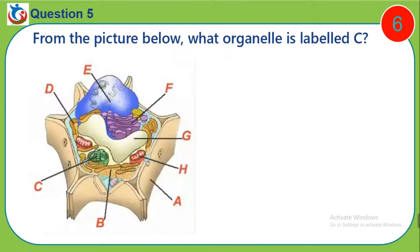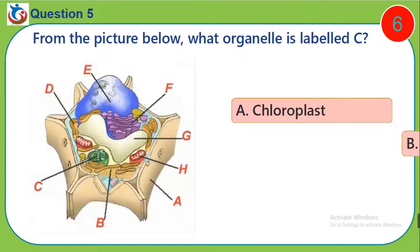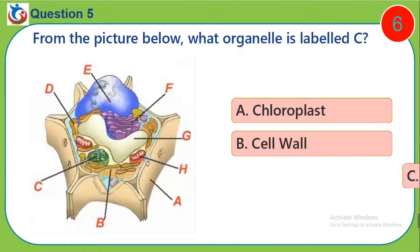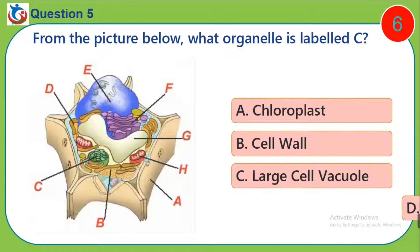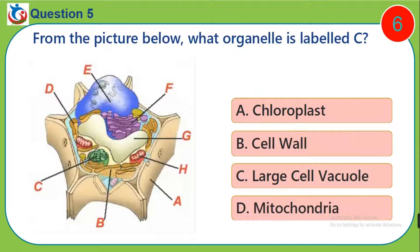Question 5. From the picture below, which organelle is labelled C? A. Chloroplast. B. Cell wall. C. Large cell vacuole. D. Mitochondria.